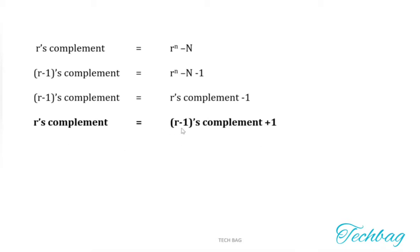First, you calculate R-1's complement, then add 1 to get R's complement. The direct computation of R's complement is somewhat difficult because it involves a borrow operation, which makes the subtraction more complex. So normally we use this method to calculate R's complement via R-1's complement.